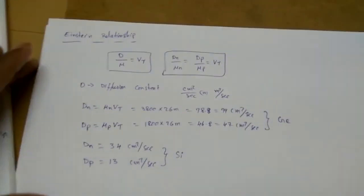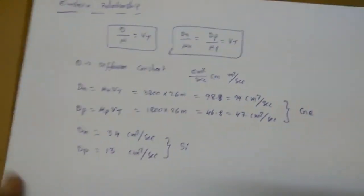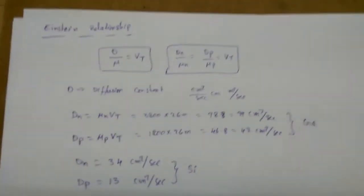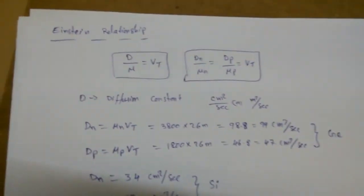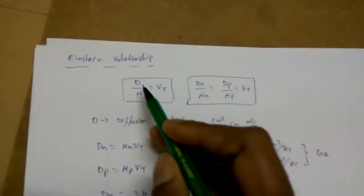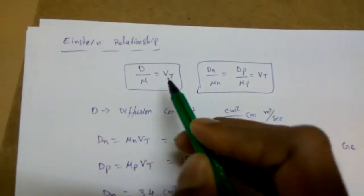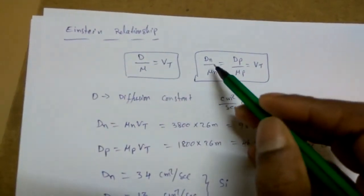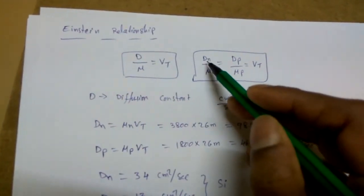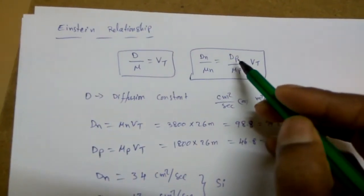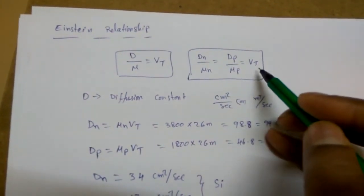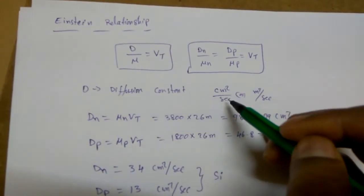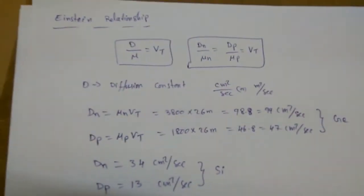The next very important topic is the Einstein relationship. It relates diffusion constant D and mobility mu through: D/mu = V_T (thermal voltage). For electrons: D_n/mu_n = V_T; for holes: D_p/mu_p = V_T. The diffusion constant has units of cm²/s or m²/s.